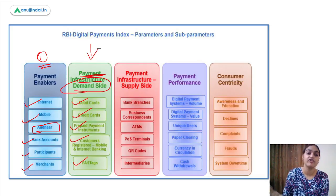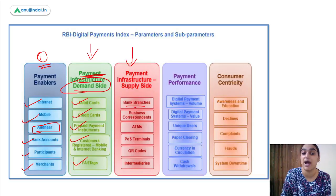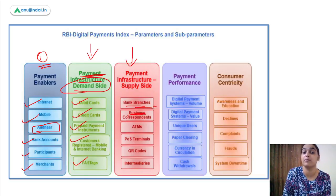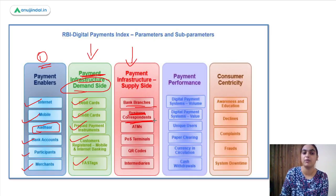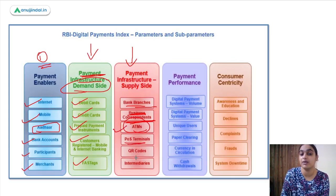On the supply side of payment infrastructure, we need bank branches which provide such services, business correspondents who help provide services where banks are not present, ATMs, point of sale terminals, QR codes, and intermediaries. All these are part of the supply side infrastructure.